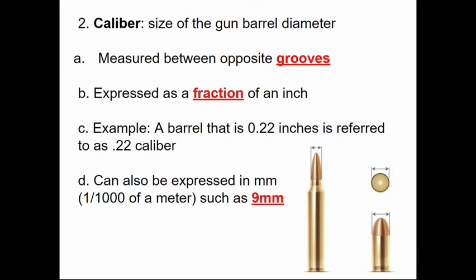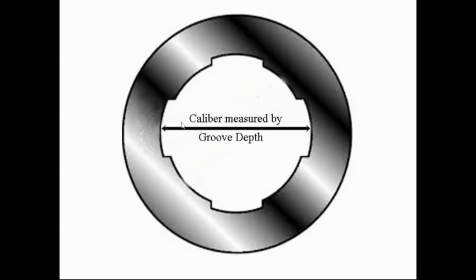A .22-inch diameter is what we call a .22 caliber. We could also say 9 millimeter — in the case of a 9mm, that would be just smaller than a centimeter, which is 10 millimeters. So from groove to groove, that diameter is the caliber. In a .22, it measures .22 inches across from groove to groove.